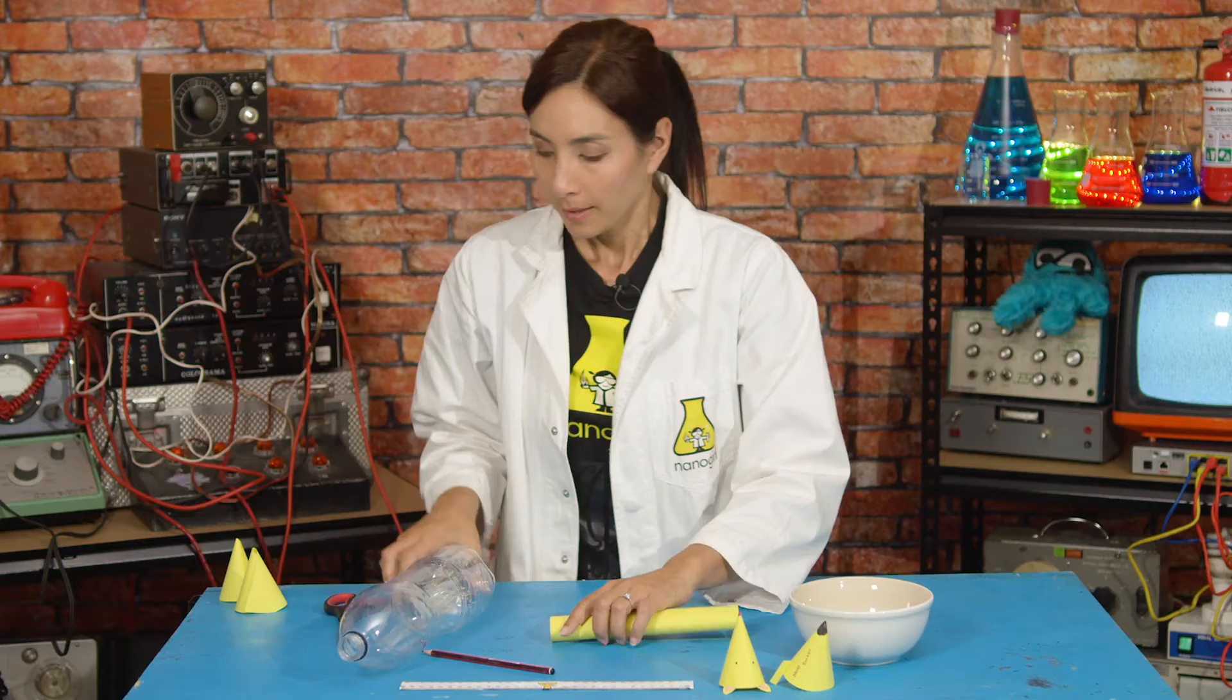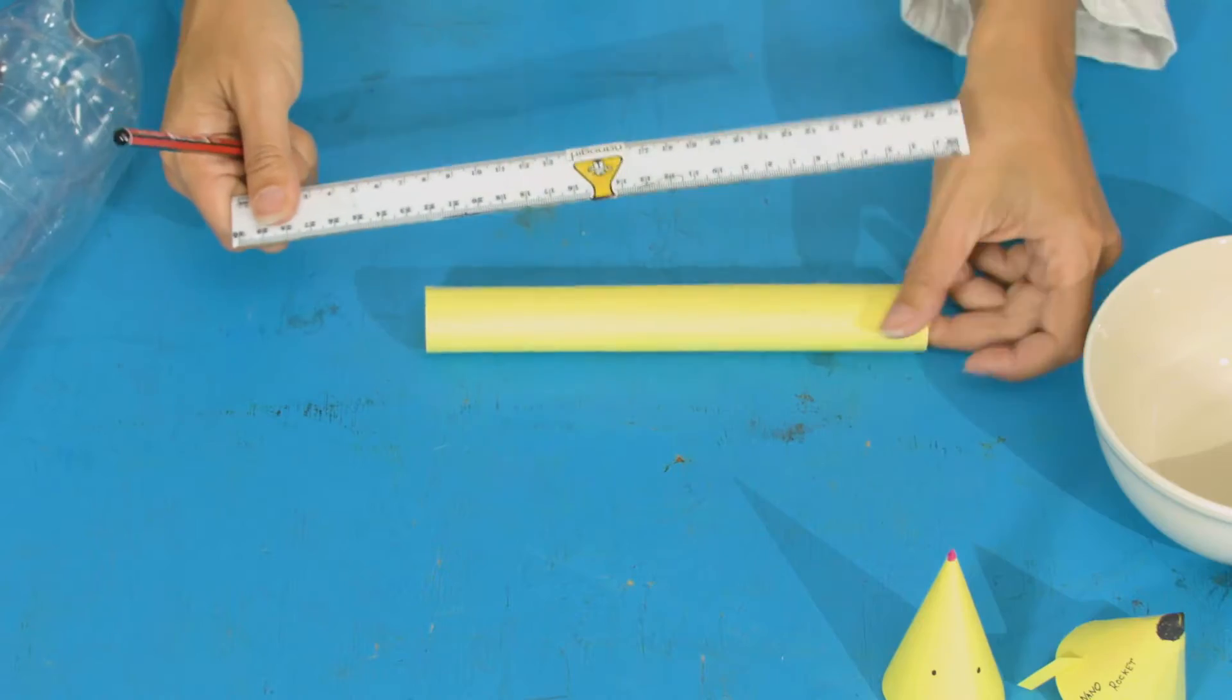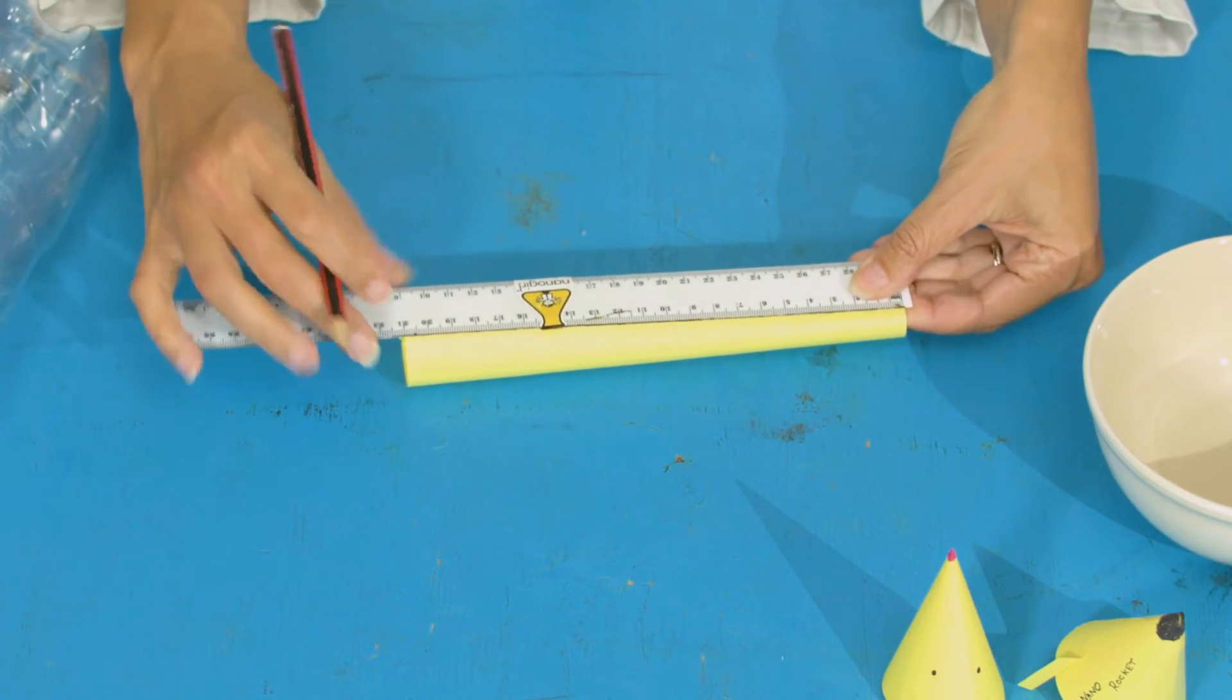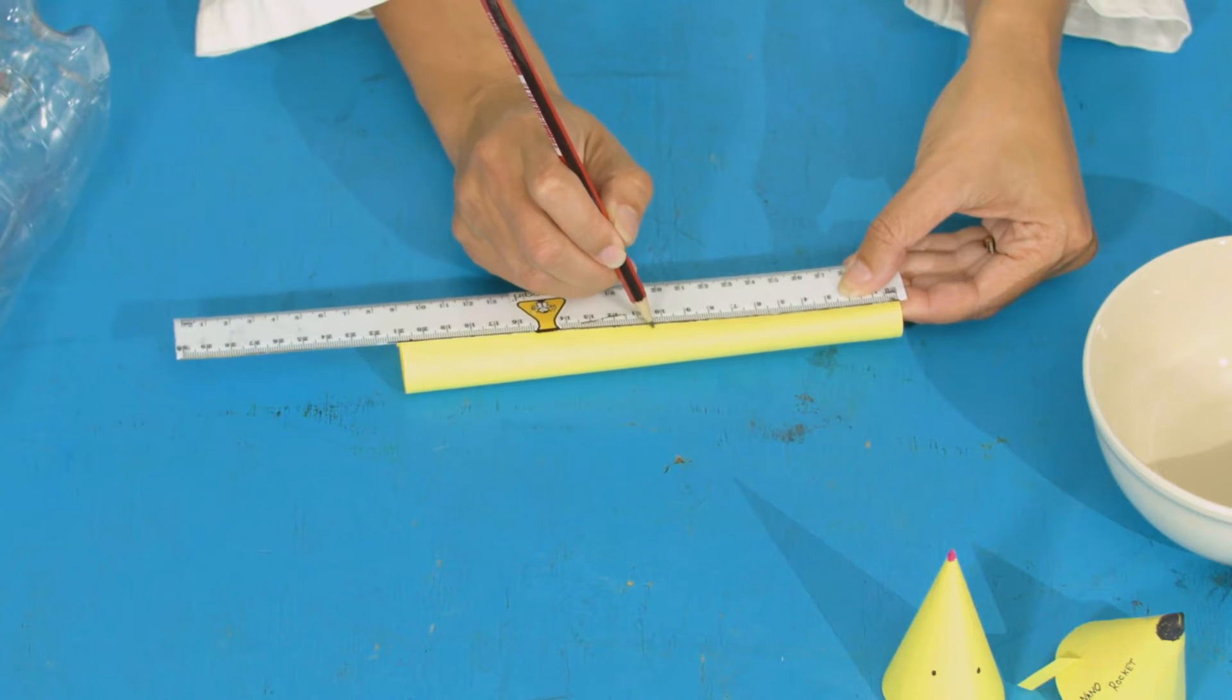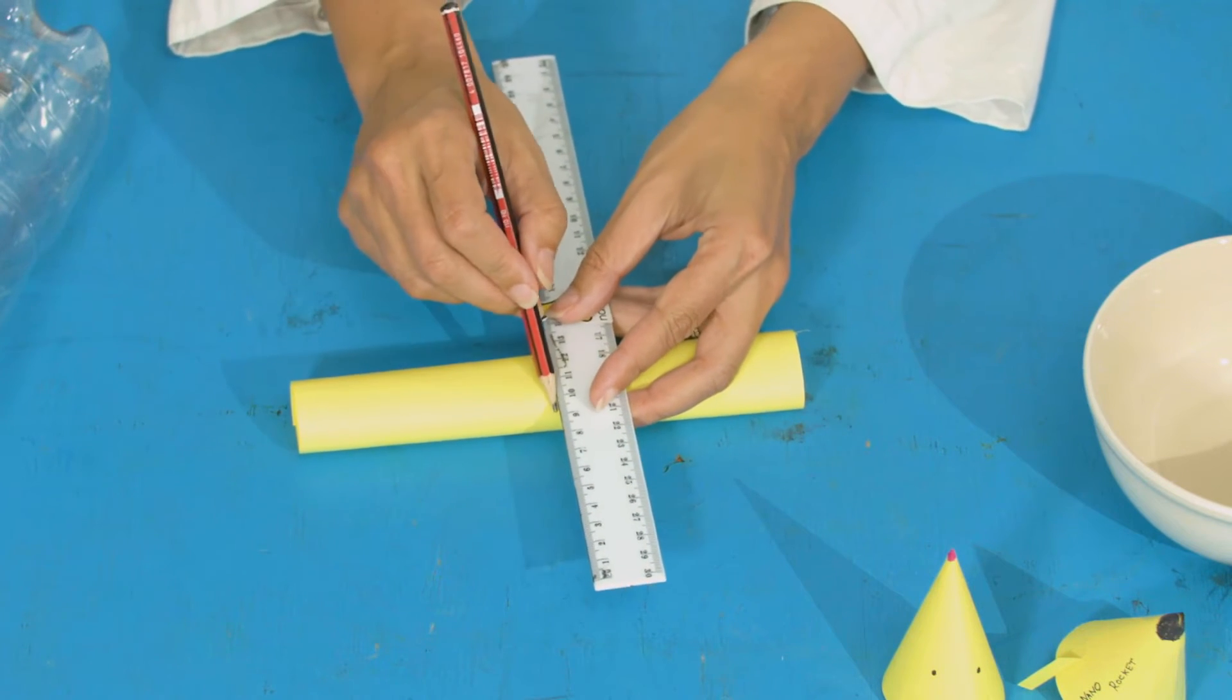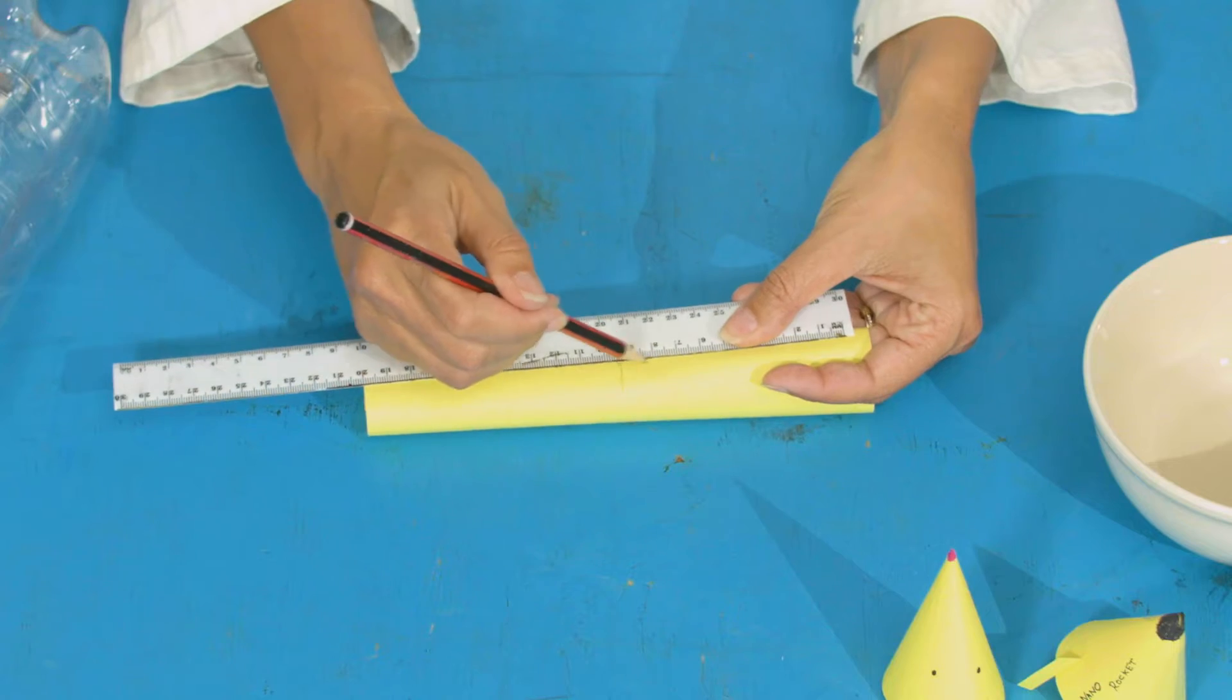Next, you're going to take your ruler and you're going to measure halfway down your tube. So my tube is about 21 centimeters, so half of that is 10.5. Draw a line with your ruler, it's horizontal down that middle mark, and then you're going to go 90 degrees and do one across.